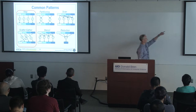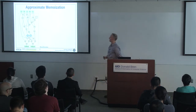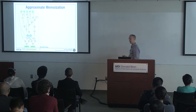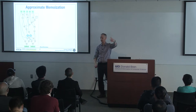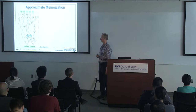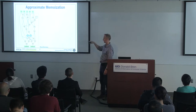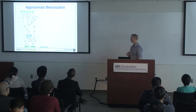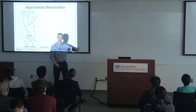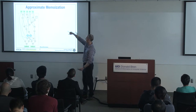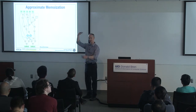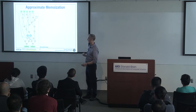Let me give you an example for the map pattern — what we call approximate memoization. Memoization means you call a function, remember the inputs, and if you call it again with the same inputs, you just return the cached value. This is the main compute portion of Black-Scholes, a financial call/put prediction application. Each node is an arithmetic function — divides, square roots, multiplies. There are five inputs, a big computation, and you produce the call and put results. This is perfect for approximation: there's lots of work, and if I can approximate it, I save a lot by getting rid of that computation.